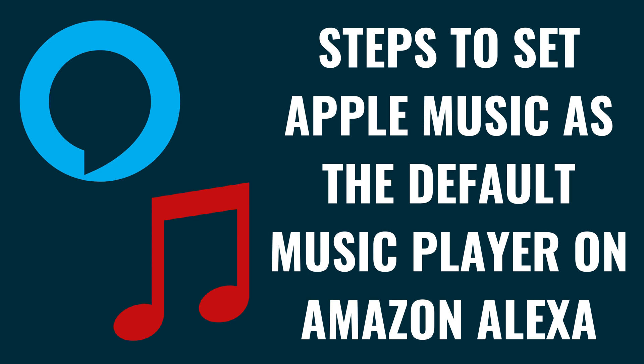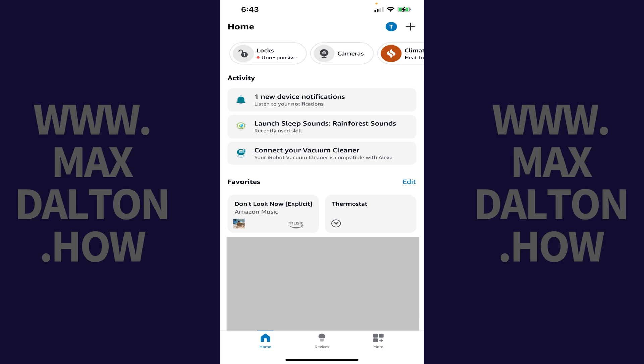Now that you've linked your Apple Music account to your Amazon Alexa account, you'll need to set up Apple Music as the default music player on your Alexa account. Step 1: Open the Amazon Alexa app on your iPhone, iPad, or Android device. You'll land on your Amazon Alexa home screen.